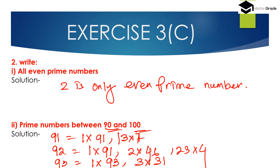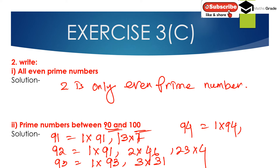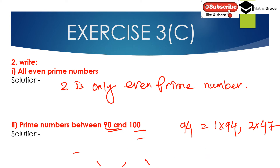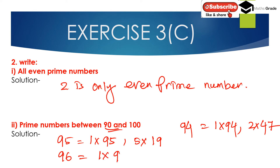94 is also not a prime number because it has more than 2 factors: 1, 2, 47, and 94. And 95 is also not a prime number because 1 multiplied by 95 and 5 multiplied by 19 give more than 2 factors. Then 96: 1 multiplied by 96, 2 multiplied by 48, and 3 multiplied by 32 — so 96 has more than 2 factors and is not a prime number.